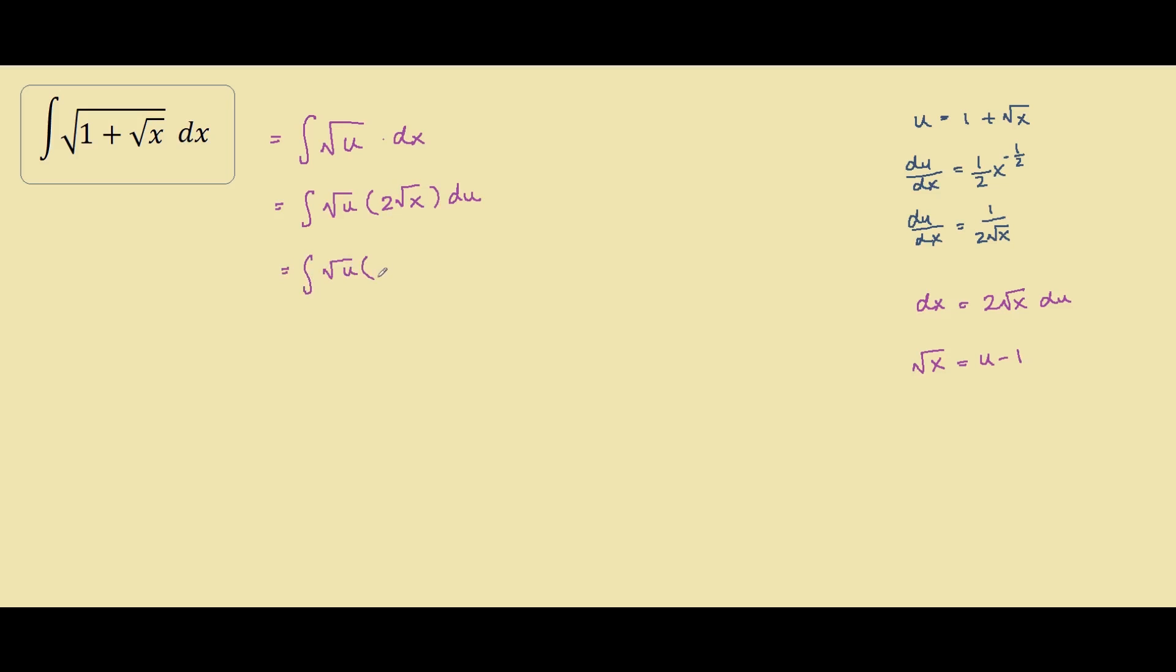So we plug this into our integral, we have 2u minus 2, after multiplying it by 2 du. Since now everything is in terms of u, we can just integrate it. But first of all let's get rid of the brackets. So we have square root of u times 2u would be 2u to the power of 3 over 2 minus by 2 times the square root of u, which can be written as u to the power of half.